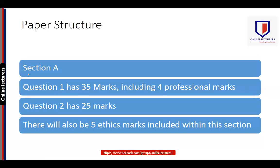As far as Section A is concerned, it comprises Question 1, which is worth 35 marks. We can assume there will be a long scenario-based question considering multiple tax issues, advice, interactions, and so on. Four professional marks are part of the 35 marks, so a good structured answer will earn you those four professional marks. Question 2 is worth 25 marks, covering multiple tax issues as well. There will be five ethical marks covered in this section — either in Question 1, Question 2, or both.